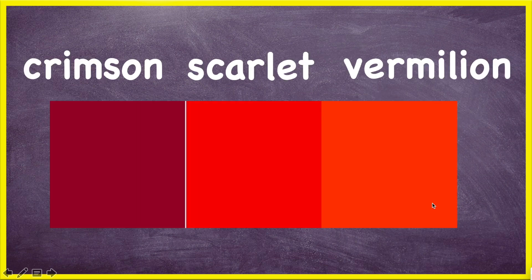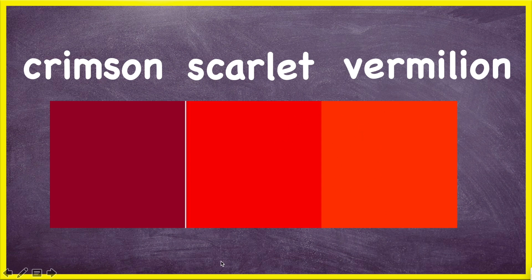Now here we have three: we have crimson, scarlet, and vermilion. Crimson red is this dark red — a lot of wines are kind of a crimson color. Then you have scarlet, which is a popular color for a dress or lipstick — crimson lipstick. And then we have vermilion, which is more orangey. Crimson, scarlet, and vermilion.